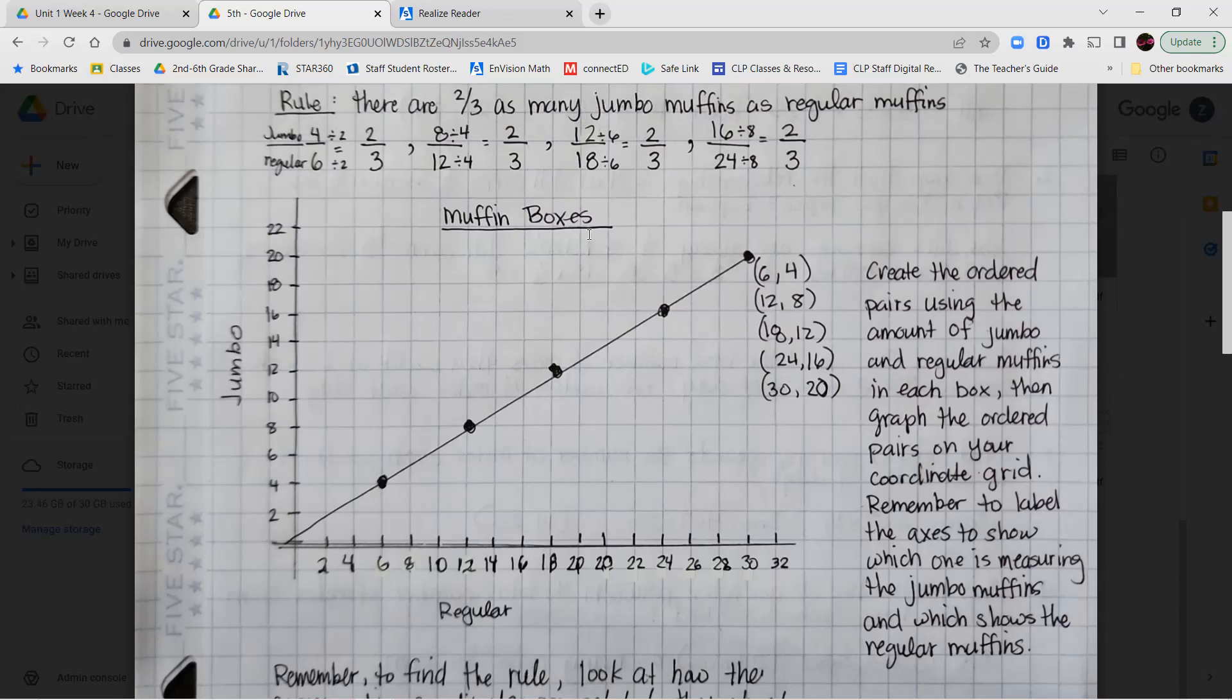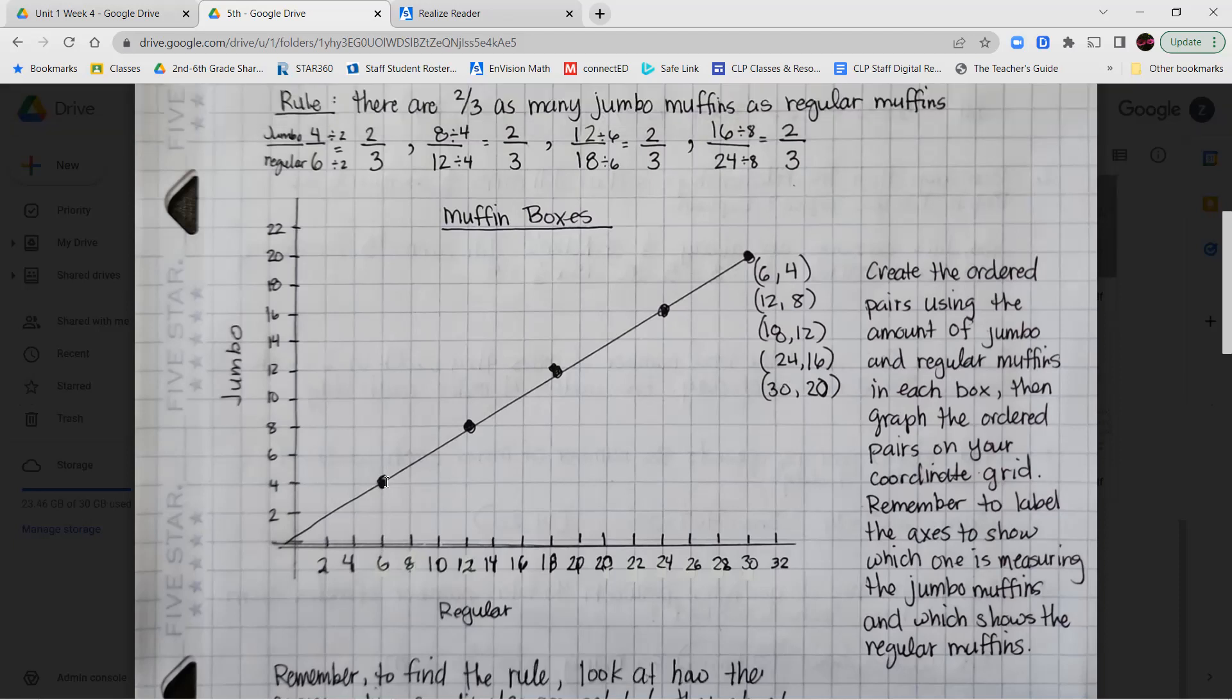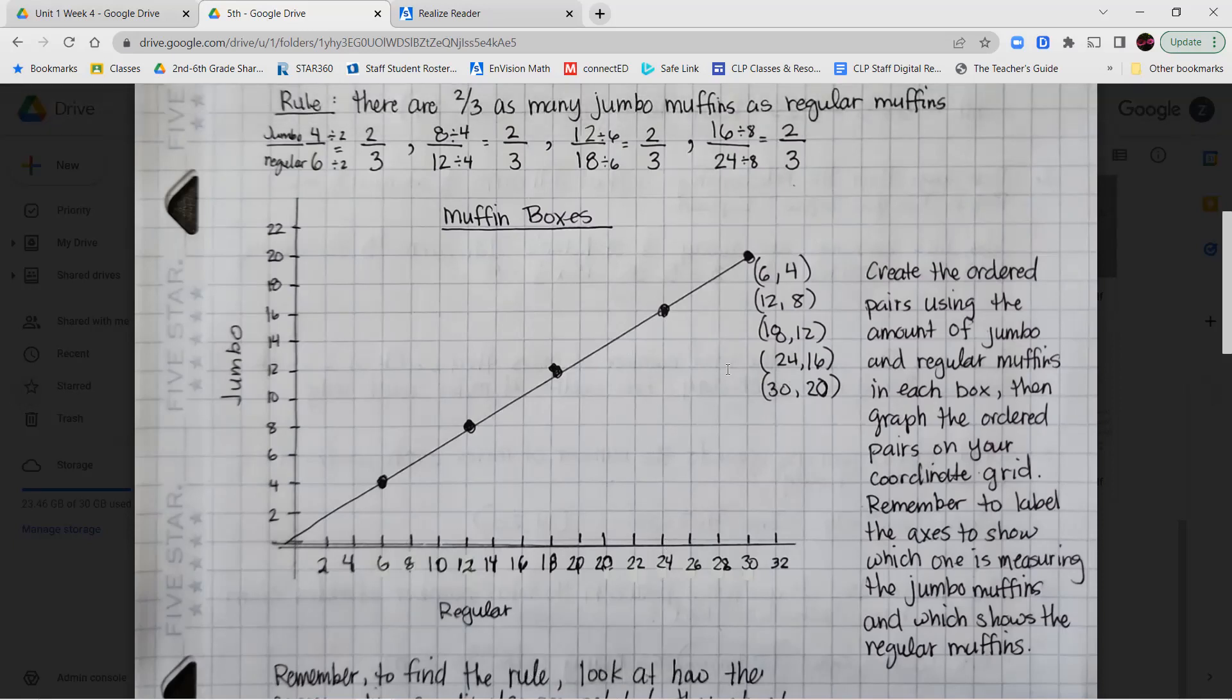So my first point was at six, four. So I went across six regular muffins for every group of four jumbo muffins, then 12 regular muffins for each group of eight jumbo muffins. 18 regular muffins for every group of 12 jumbo muffins, 24 regular muffins for each group of 16 jumbos. And then if you wanted to extend it out to five boxes, 30 regular muffins for each group of 20 jumbo muffins.